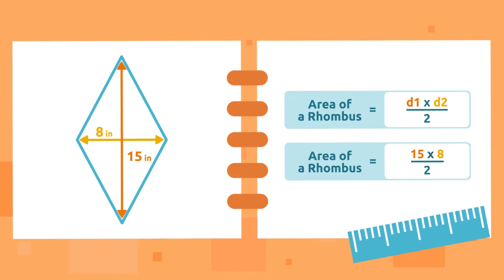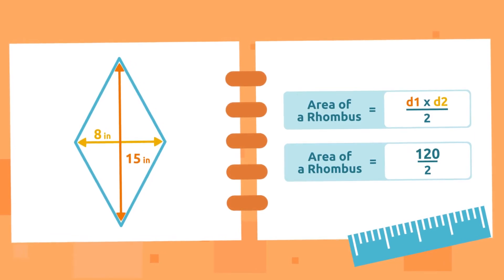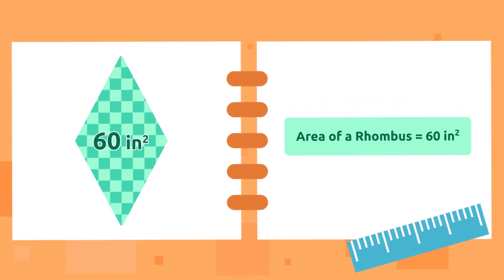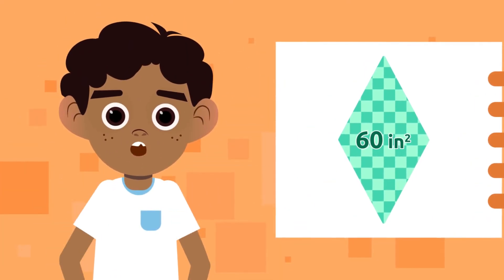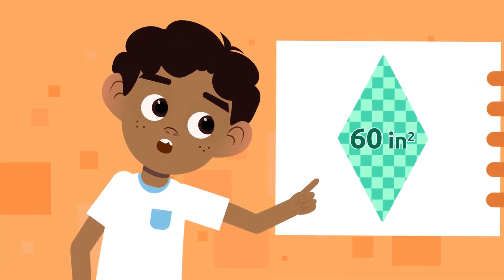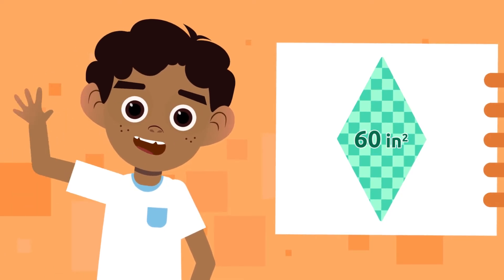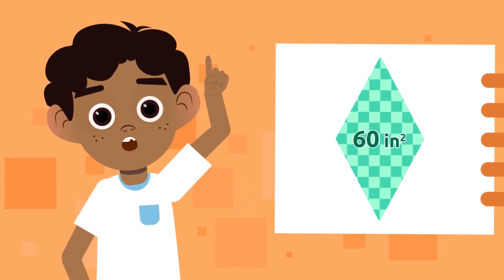That is, 15 times 8 equals 120, and 120 divided by 2 equals 60. Great! The area of this rhombus is equal to 60 square inches. This rhombus fits 60 one-square-inch squares. Well done!